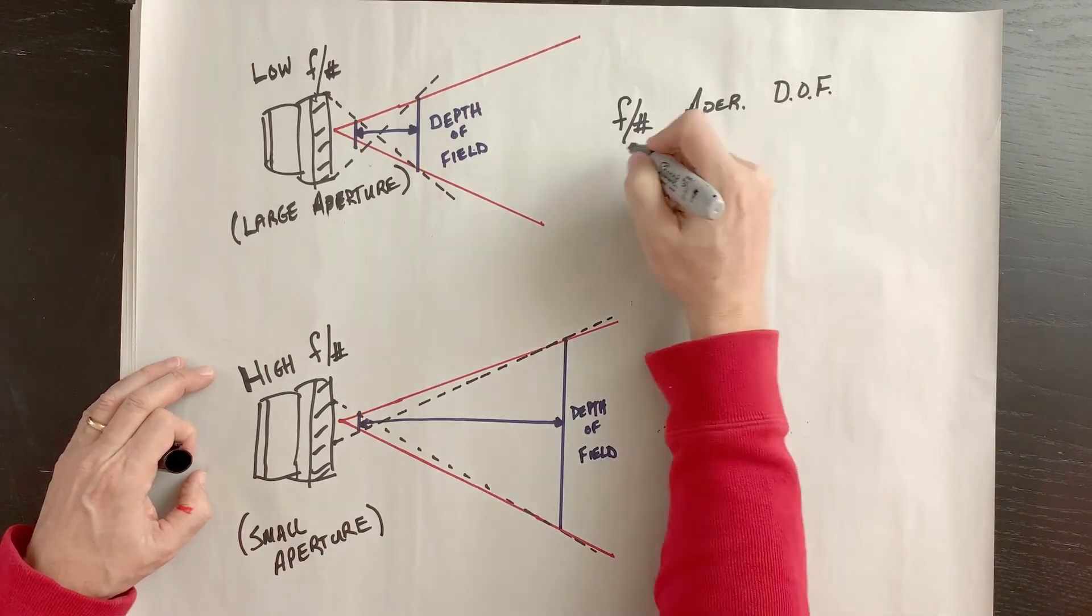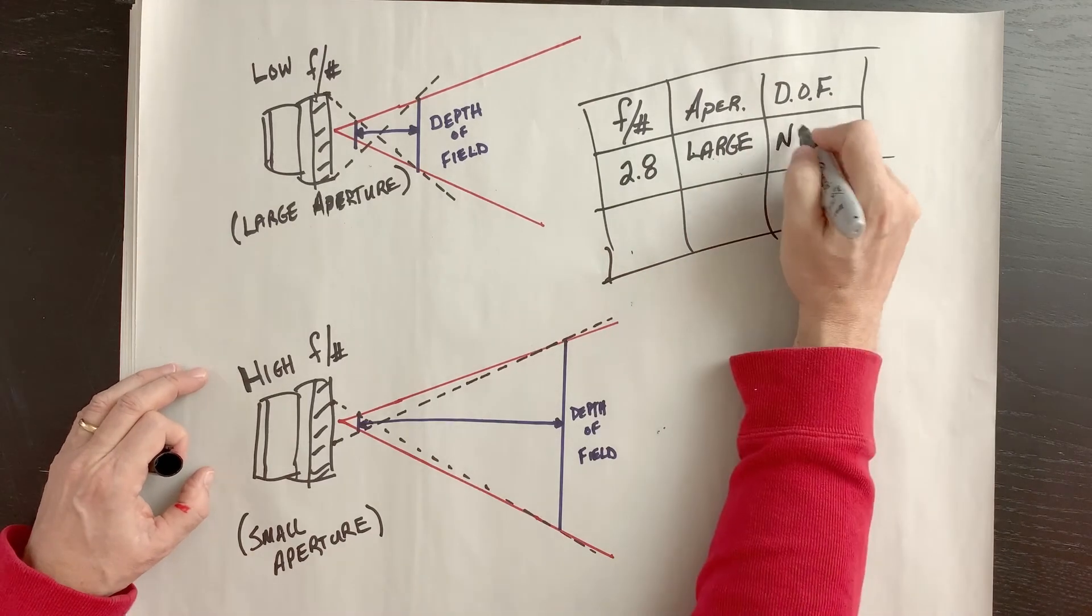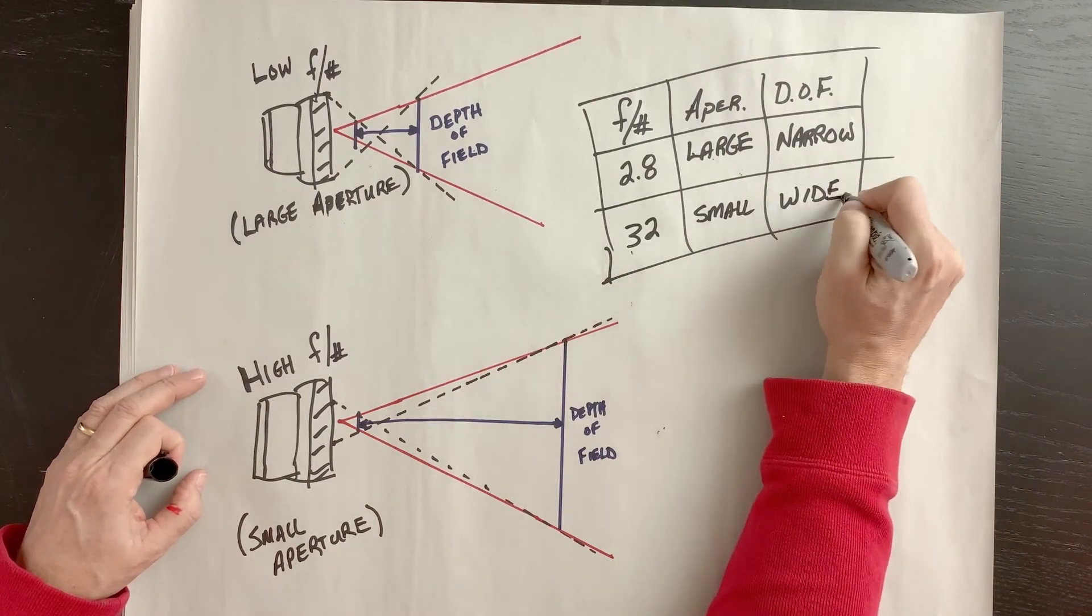And remember the reason the f-stop number seems to be larger when in fact the opening is smaller is because it's the denominator of a fraction.